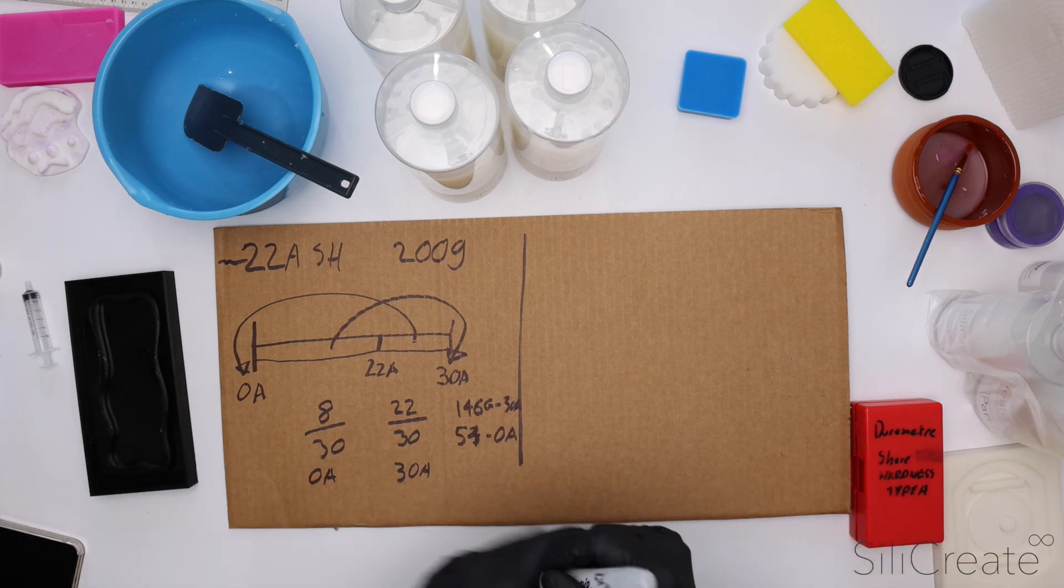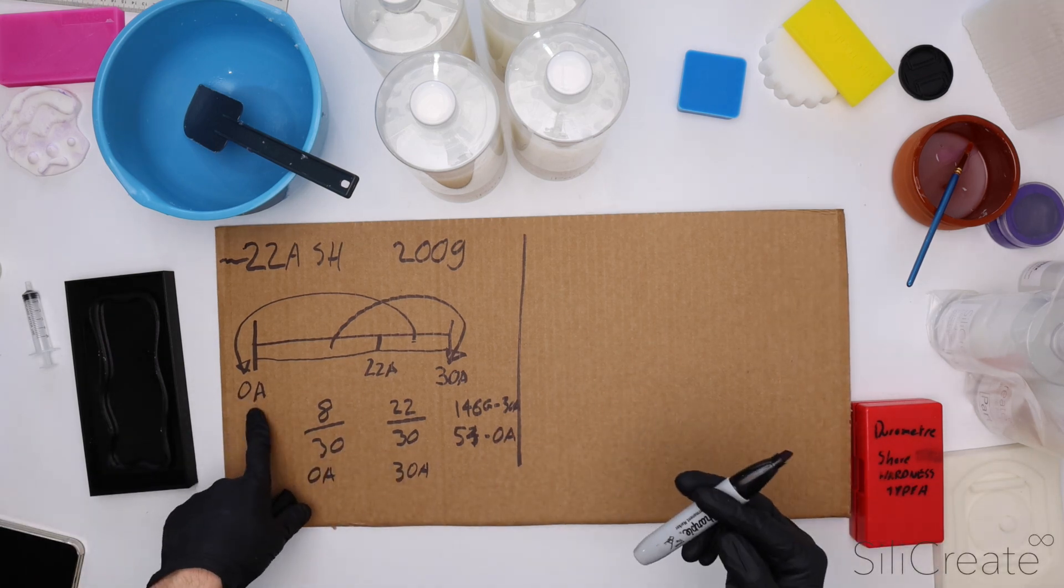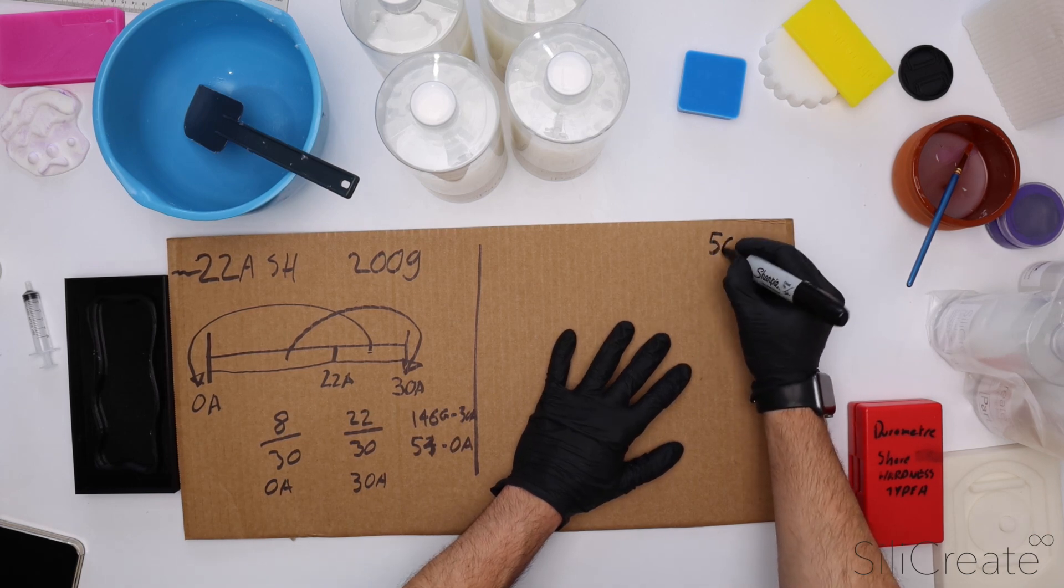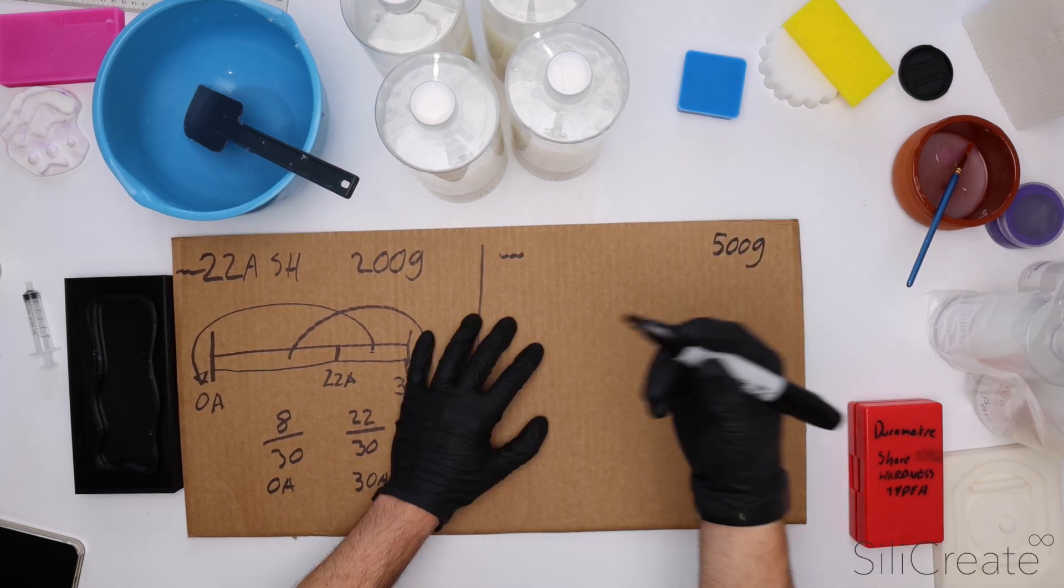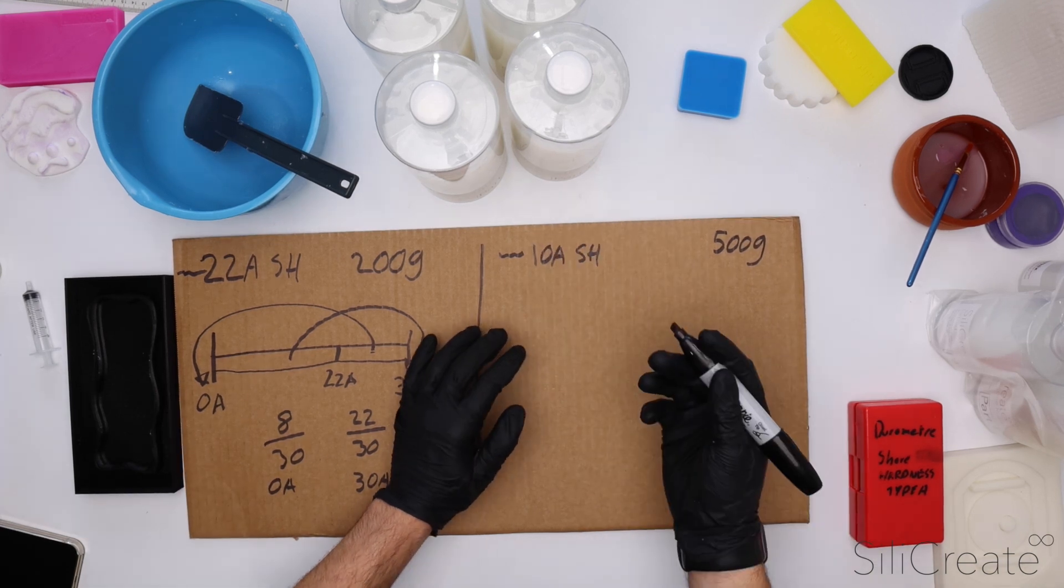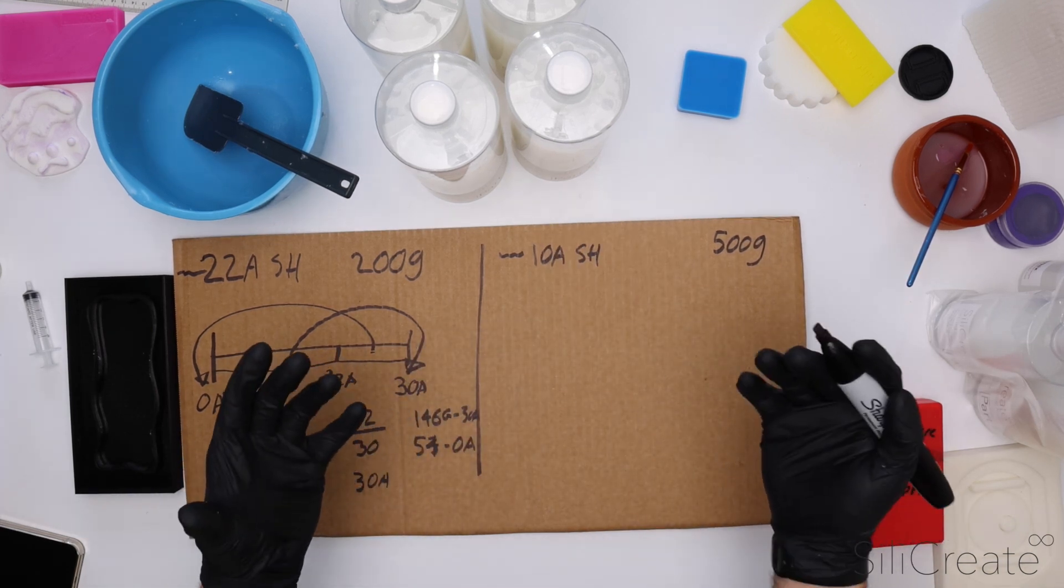This example is relatively easy because we start with the 0A, but let's just do another example. Let's say we're going to need 500 grams of silicon this time. We want roughly a shore hardness of 10A, and let's just make it a little bit more complicated.